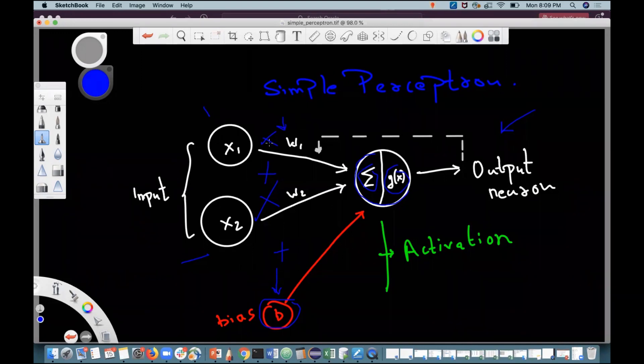Here something similar is happening but you are learning weights and biases. Once you sum up this thing, the equation will become x1 w1 plus x2 w2 plus b. Then some activation will be applied on the whole thing.